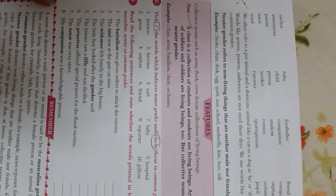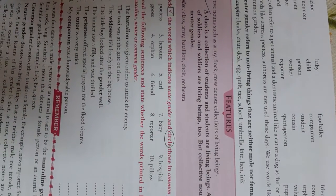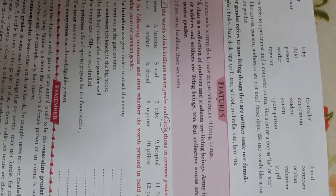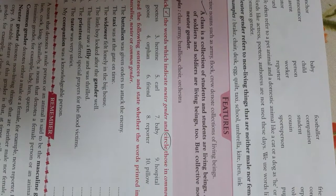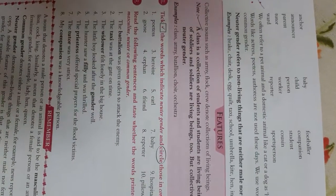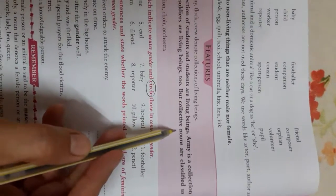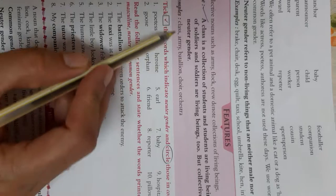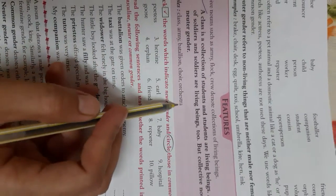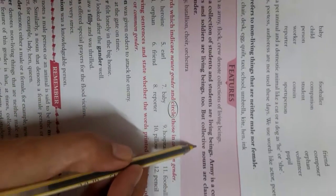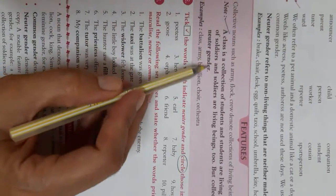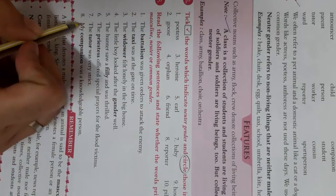Collective nouns such as army and flock denote collections of living beings. A class is a collection of students, and students are living beings. Army is a collection of soldiers, and soldiers are living beings too. But collective nouns are classified as neuter gender. Class, army, battalion, orchestra, choir — these are collective nouns and are classified as neuter gender. These are the exercises that you are going to do.